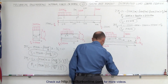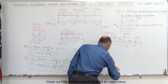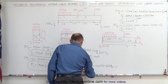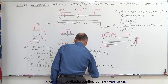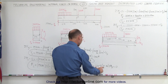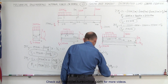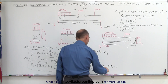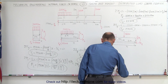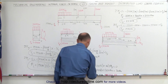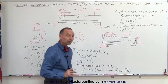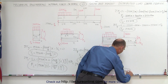Adding the moment at D and setting the sum to 0, we solve: the moment at D equals 1,970 N times x, minus 1,200 N times x, plus 3,600 N·m. Simplifying, that's 3,600 N·m plus 770 N times x. That is the moment at D as a function of X.